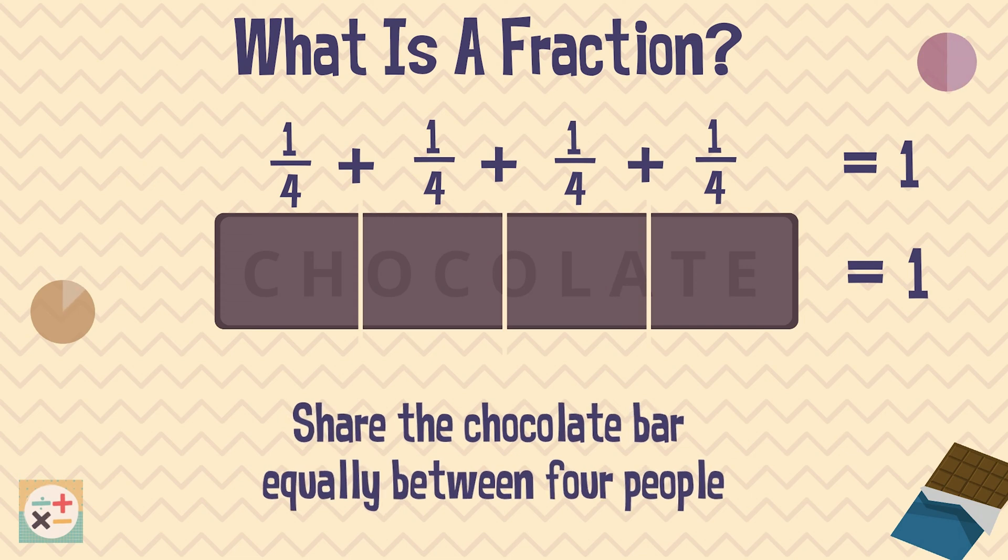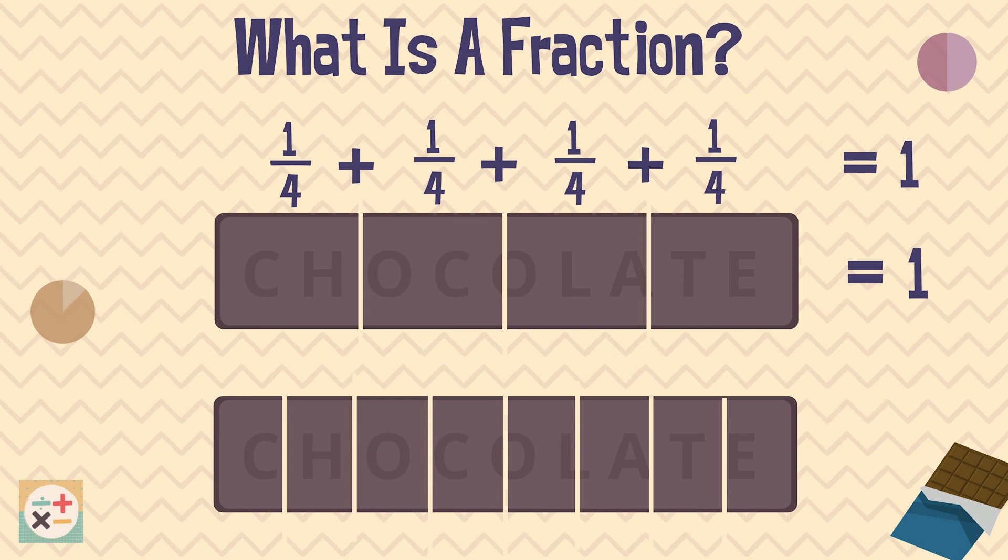What if we want to share a similar bar between eight people? We divide the whole bar into eight equal pieces, in other words, eights. As you can see here, eight lots of eighths will make a whole.